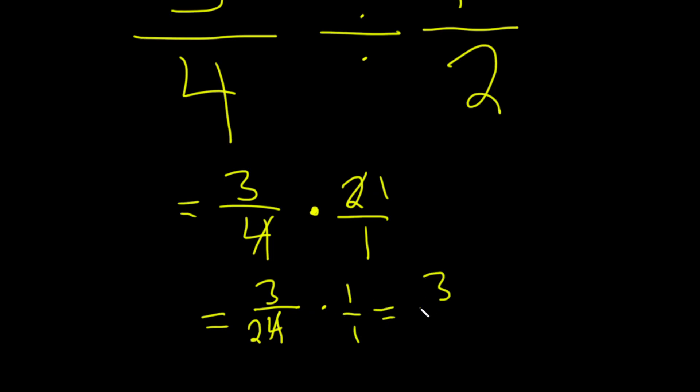So this is going to be 3 times 1 is 3, and 2 times 1 is 2. We're going to get 3 halves. So that would be the answer, or in decimal form, 1.5, or as a mixed fraction, 1 and a half.